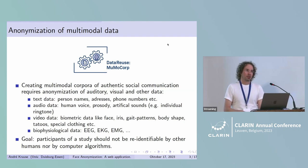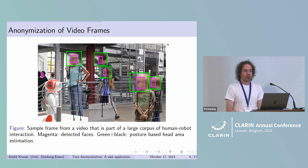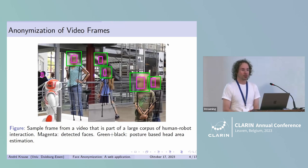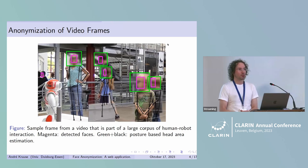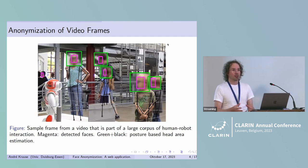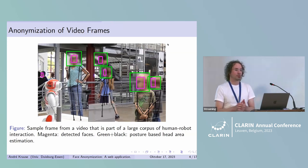The goal is that participants of a study that make up such a corpus should not be re-identifiable by either humans nor by computer algorithms. Here you can see a sample frame from the corpus, which is about human-robot interactions. We have bounding boxes around the faces and we have also tracked the body posture, because sometimes humans face away from the camera and the face detection algorithm might fail. With a body posture detector, you can estimate the head region and blur everything just to be on the safe side.